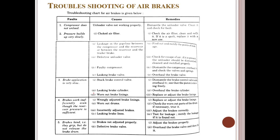For troubleshooting air brakes, the fault, causes, and remedies are as follows. If the compressor does not unload: causes include the unloader valve not working properly — dismantle, clean, and check; dirty air filter — clean or replace. Leakage in the pipeline between the compressor and reservoir, or between the reservoir and the trailer brake — find and rectify the leakage points. Defective unloader valve — check for air escape; if present, dismantle, clean, and rectify. Faulty compressor — dismantle, overhaul, and check valves and springs. Leaking brake valve — overhaul the brake valve.